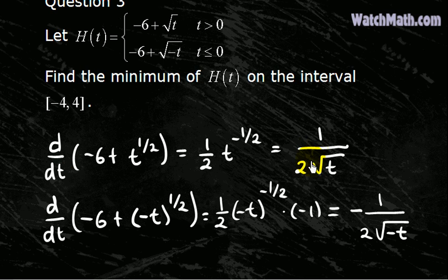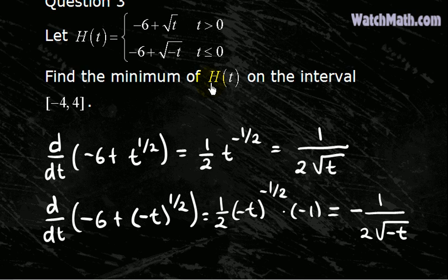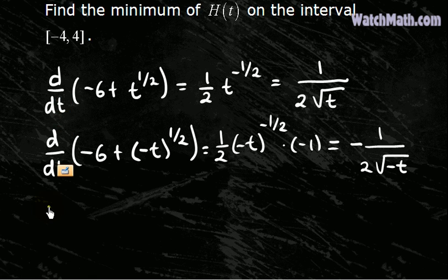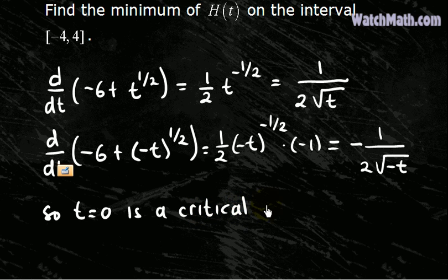One can clearly see that both of these derivatives are undefined when t equals 0, which means that t equals 0 is a critical number for h. Remember that the critical number is defined as the point where the derivative is 0, or the point where the derivative does not exist. So in this case, t equals 0 is the critical number, or critical point.